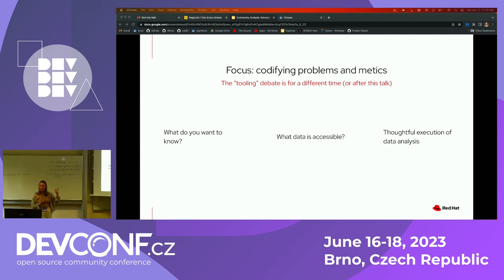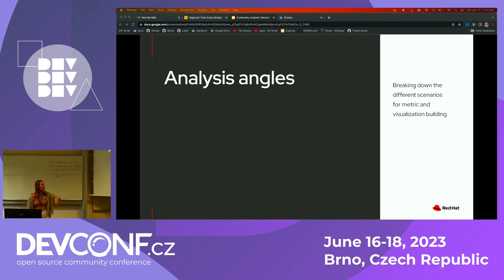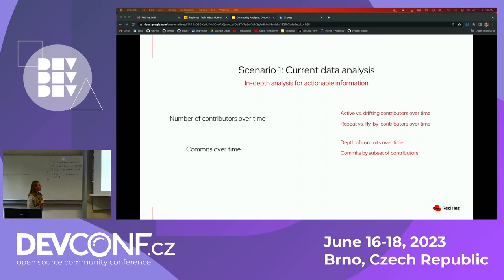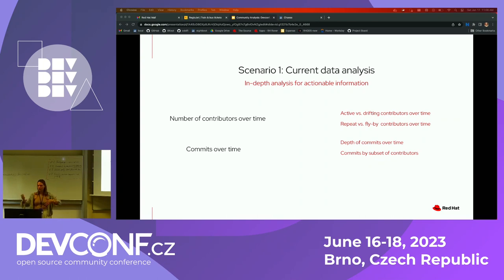So let's really hone in on the goal of our time here, which is codifying problems and metrics. The tooling debate is for another time. This starts with truly figuring out what you want to know, what data you have, and how to get to the true goal of thoughtful execution of data analysis. We're going to be going into a couple of different analysis angles and breaking down different scenarios. The first scenario is building upon current data analysis — say that you're already starting to go down the path of doing metrics, you already know what is generally useful, and you want to build off of it. It's like commits over time — that's cool, but what does that actually tell you about your community?